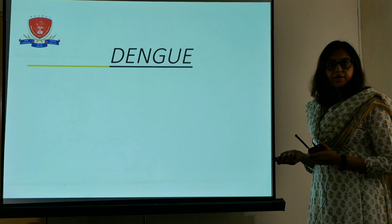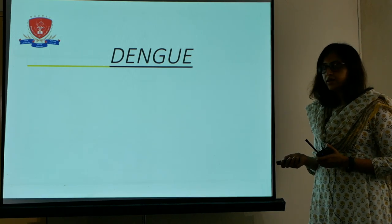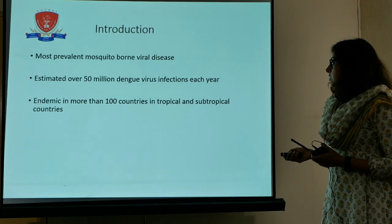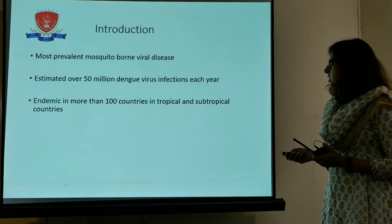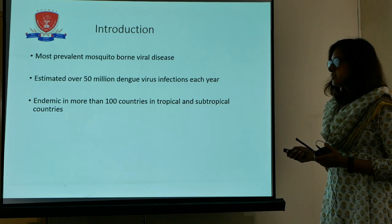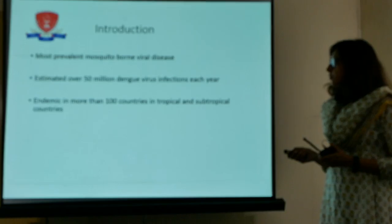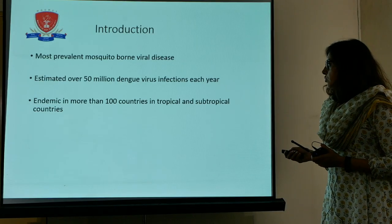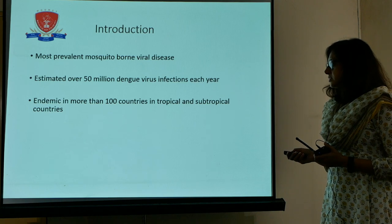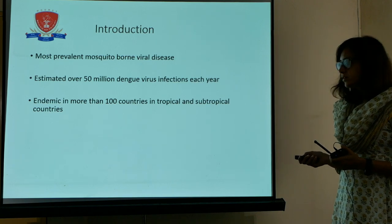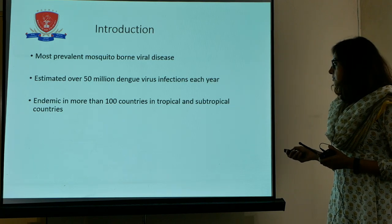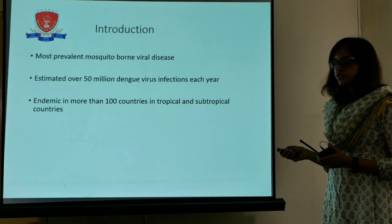Today the main topic is dengue hemorrhagic fever or dengue fever, which we will discuss in detail. It is mostly transmitted as a mosquito-borne viral disease — one of the most important ones. Over 50 million patients have been affected with dengue per year and it is endemic in more than 100 countries, more so in tropical and subtropical countries which includes India and Southeast Asian countries.